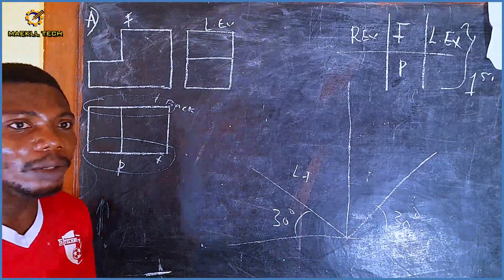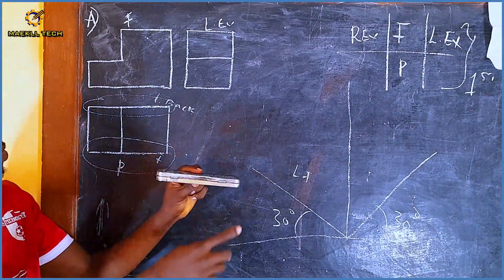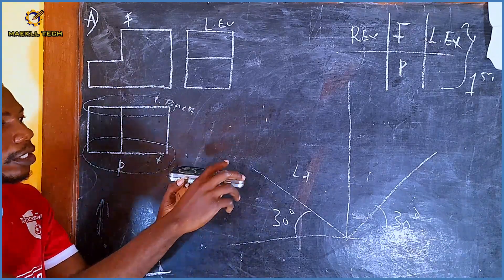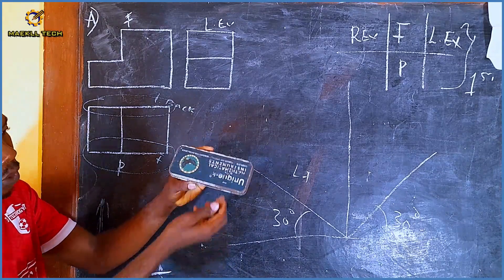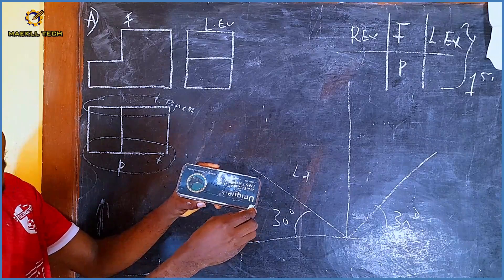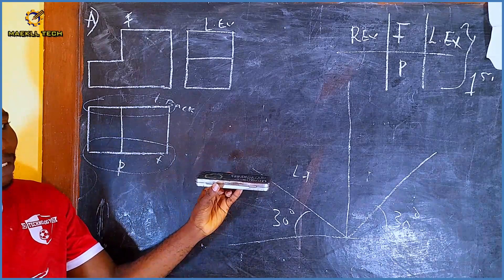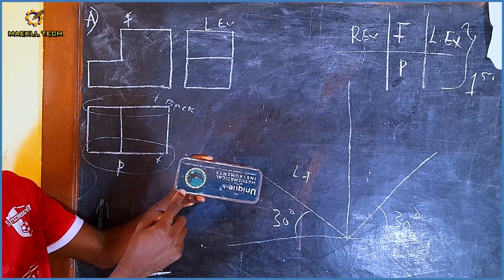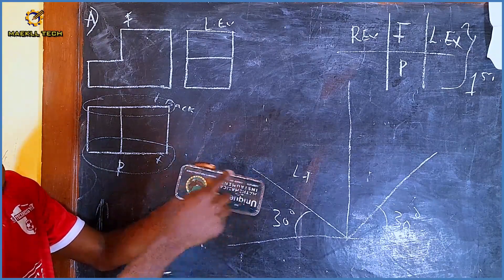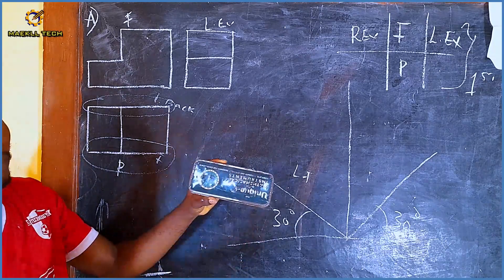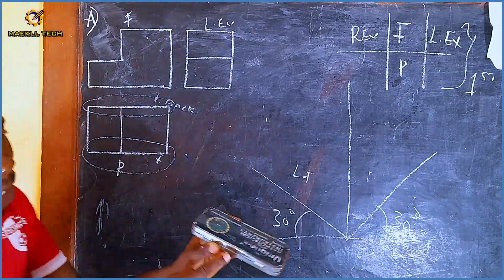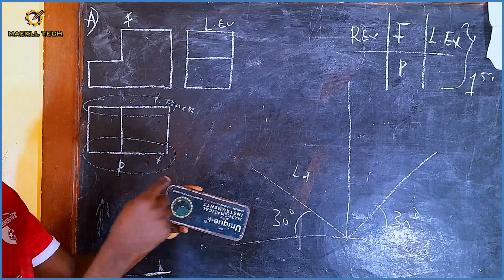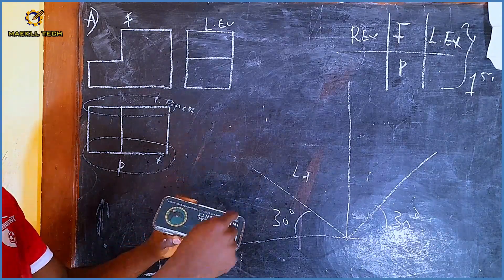Let me explain with this math set. Assume this is the front view of this math set, and this is the plan. If I tilt it like this, you are seeing the plan. This area of my plan is my front view while this area is the back view. If I turn the object, you can see the front view and the back view. So this area of my plan is the front view, while this other area is the back view, and the sides are the end views. The same shape I have on the front is the same shape I have on the back.